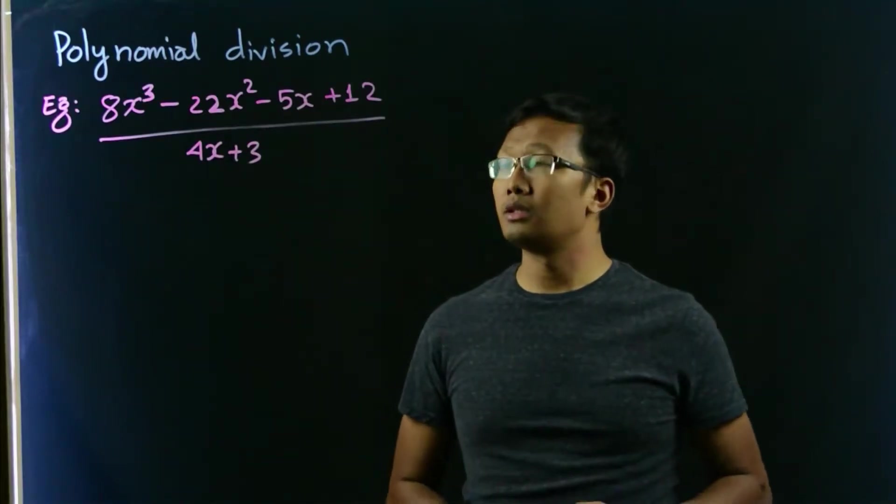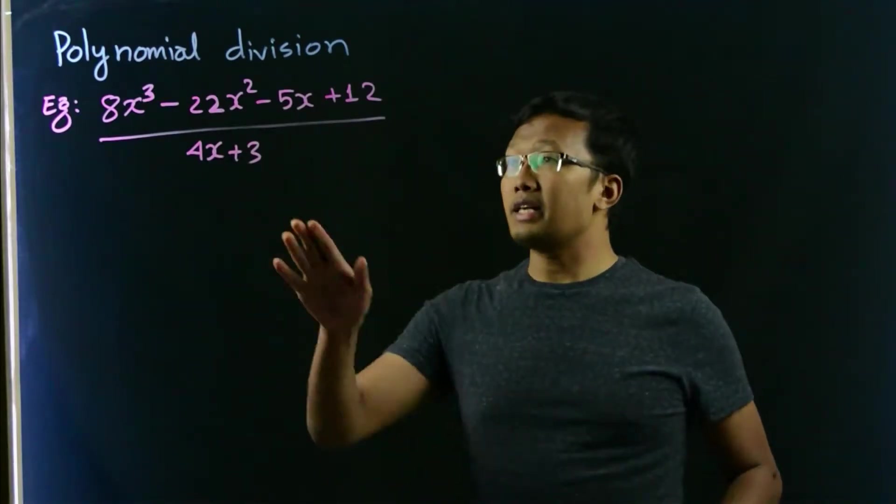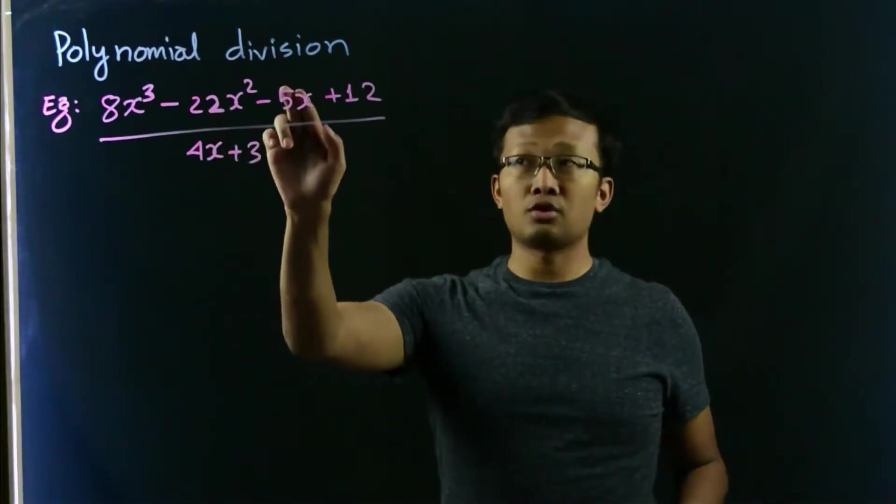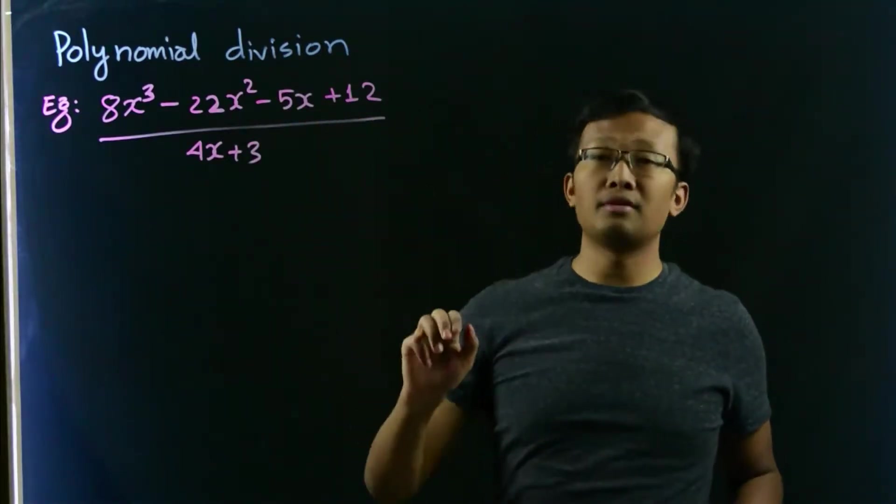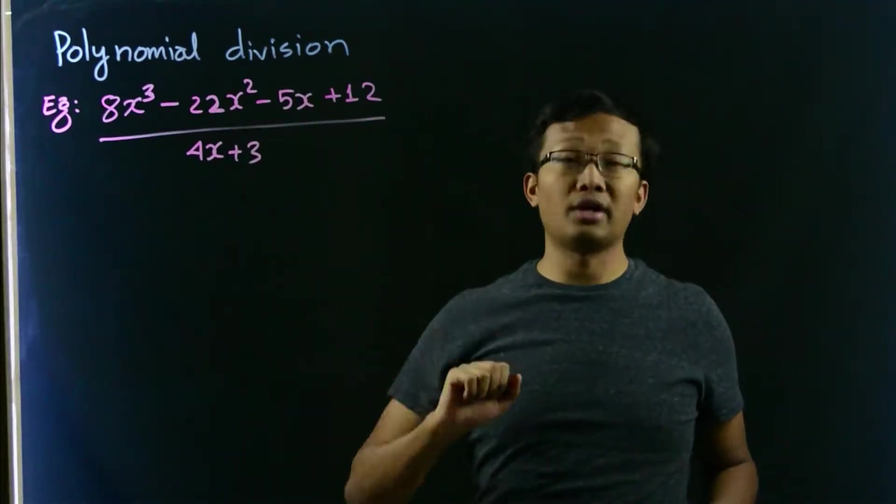Let's take another example. 8x cubed minus 22x squared minus 5x plus 12 is divided by 4x plus 3.